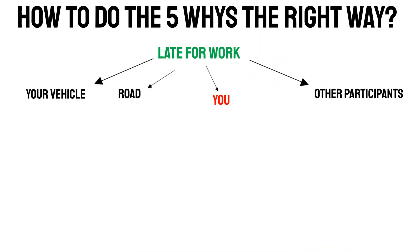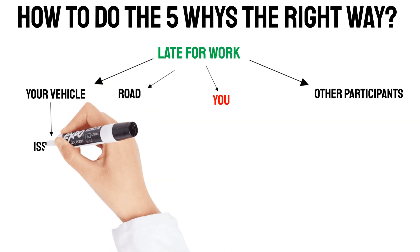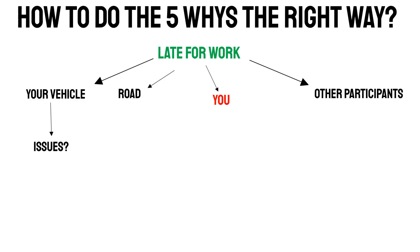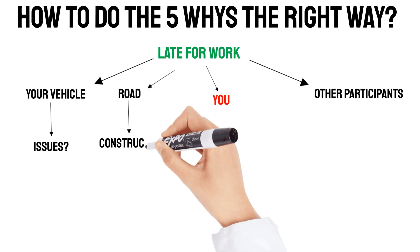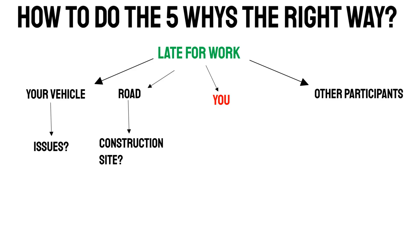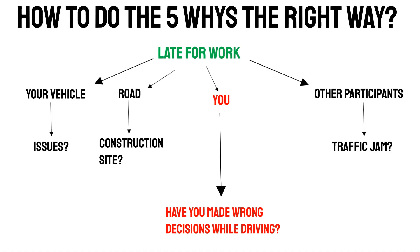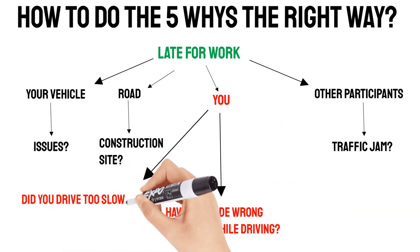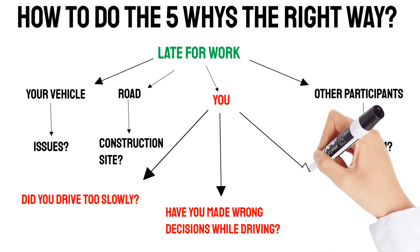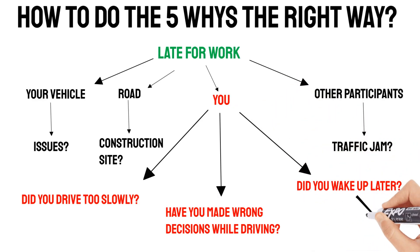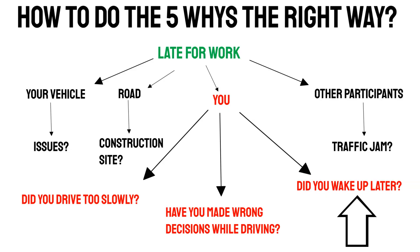Now we can refine each branch by asking why this component could be the root cause. For your vehicle: why could the vehicle be the problem? Maybe the engine didn't start a couple of times in the morning. Why the road? Is there a construction site that is usually not there, causing a delay? Why other participants? Was there a traffic jam? And finally, why you? Have you made wrong decisions while driving — maybe took the wrong road, or were calling a friend and forgot to go in the right direction, or drove too slowly, or woke up later? As you see, waking up later is only one possibility, but the previous 5 whys example focused directly on this, ignoring all the other paths.